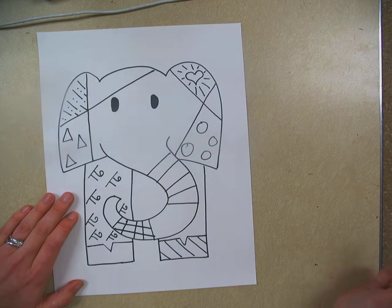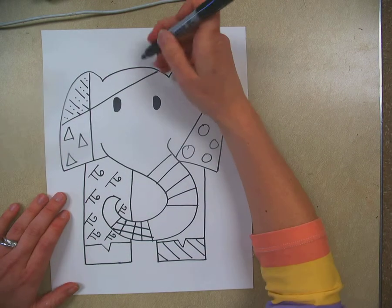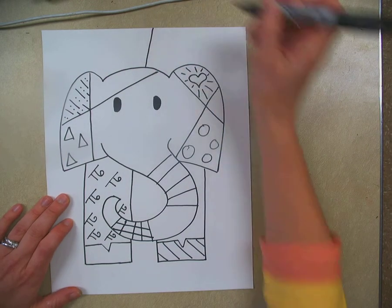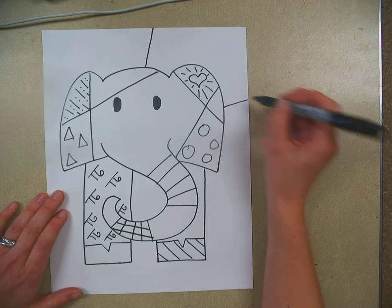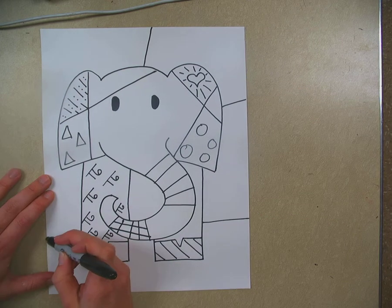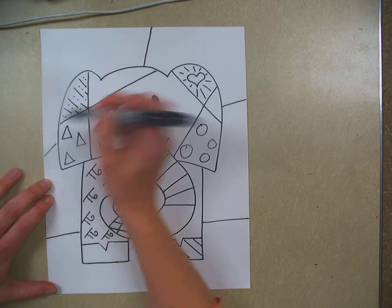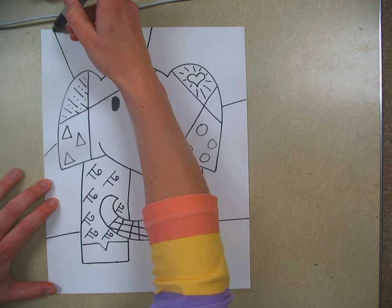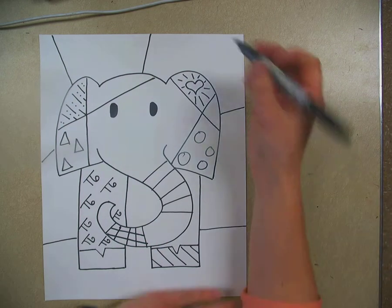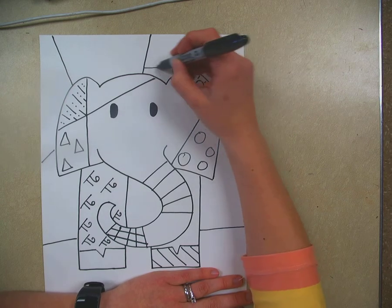What he does is he'll take his background and he'll divide it. He'll draw from his animal or whatever character he has drawn, and he draws a line to the edge of his paper. You could make this look like ground if you wanted to. Your elephant could be in the jungle, but the jungle is surrounded by different patterns.